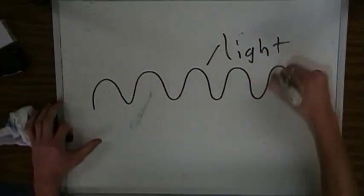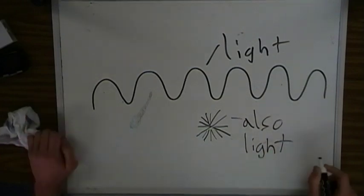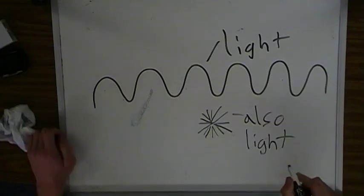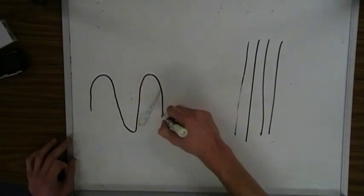Polarization. Light is a wave. We know this. But it doesn't come at you in a single stream. It comes at you in many different streams, all rotated around the same axis. So what you end up getting is this big jumble of waves.